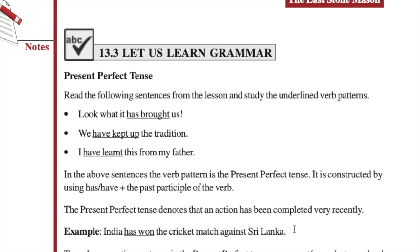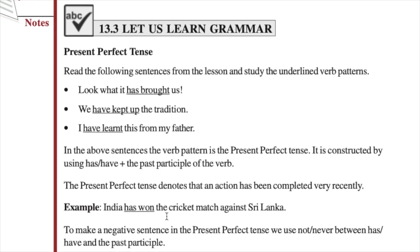Let us learn grammar. The first topic coming in grammar is present perfect tense. You have to read the following sentences from the lesson and study the underlined verb patterns. These three sentences are taken from the lesson itself: 'Look what it has brought us,' 'We have kept up the tradition,' and 'I have learnt this from my father.' The verb pattern is has or have followed by the third form of the verb. Present perfect tense is used when an action started in the past but was completed very recently.